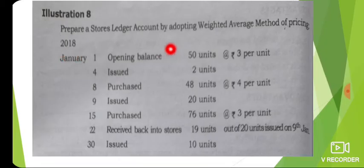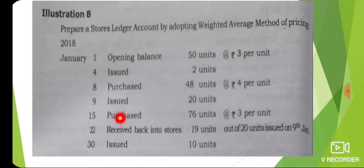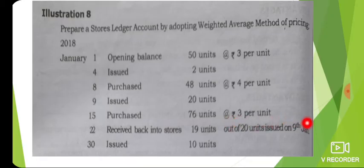Okay, if you have any problems, let's go to the next problem. Prepare a stores ledger account by adopting the weighted average method of pricing. On 18th January, opening balance is 50 units. Then issue 2 units. Purchase 2 units. Then purchase 73 units. Received back into stores 19 units out of 20 units issued on 9th January. As I said, I put the receipt.